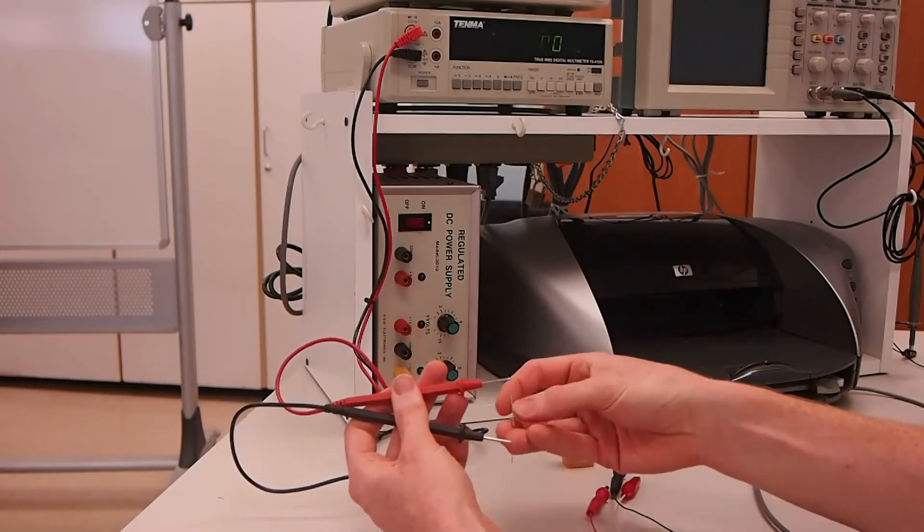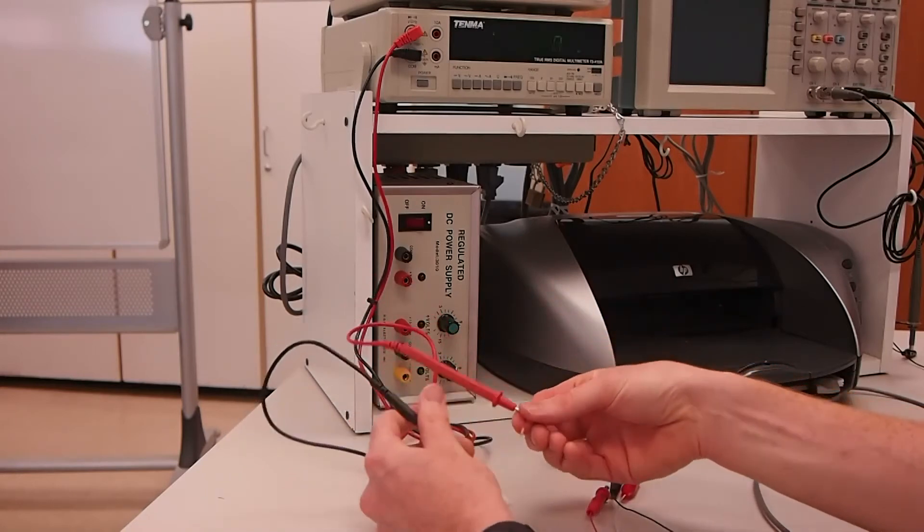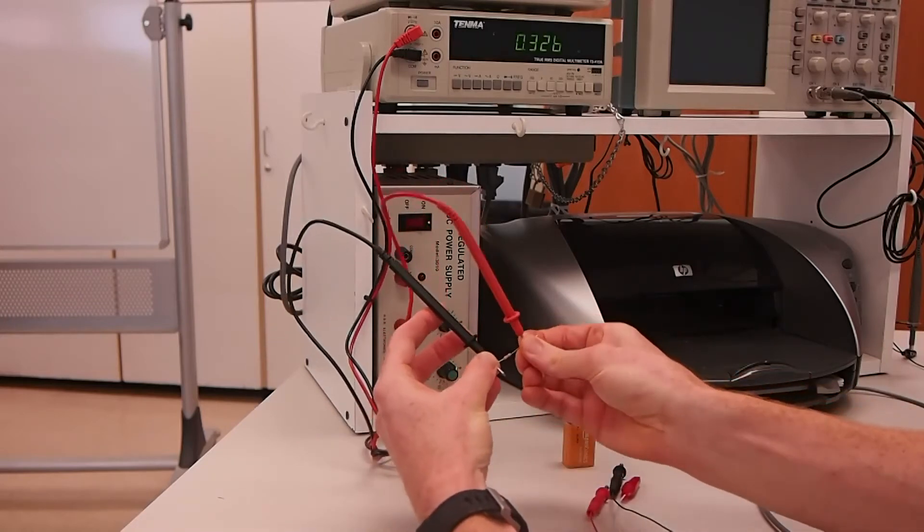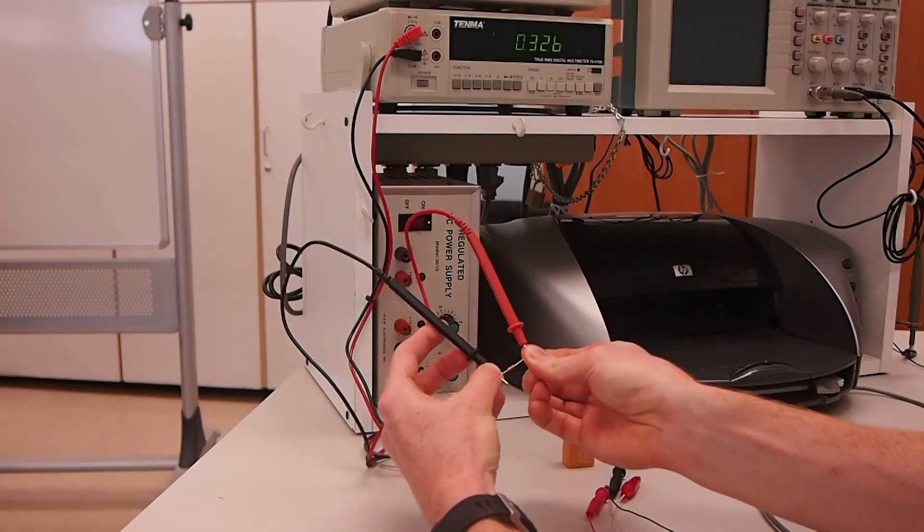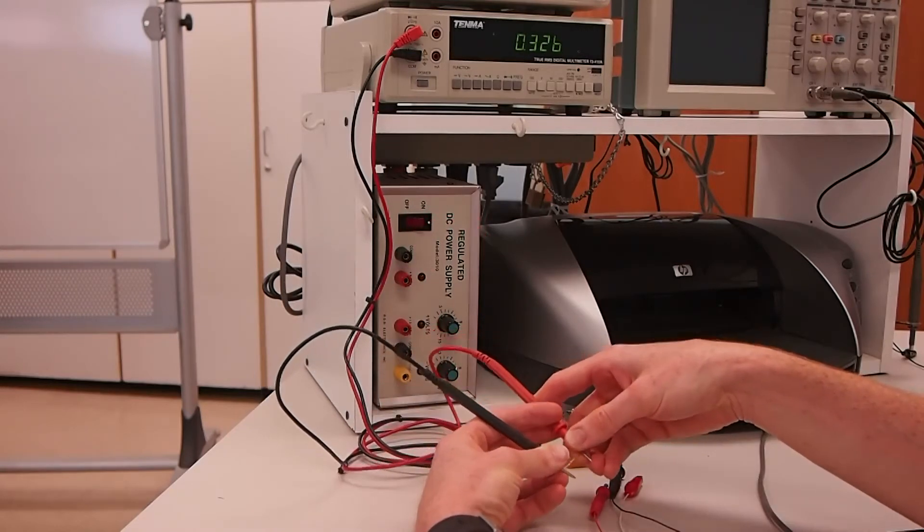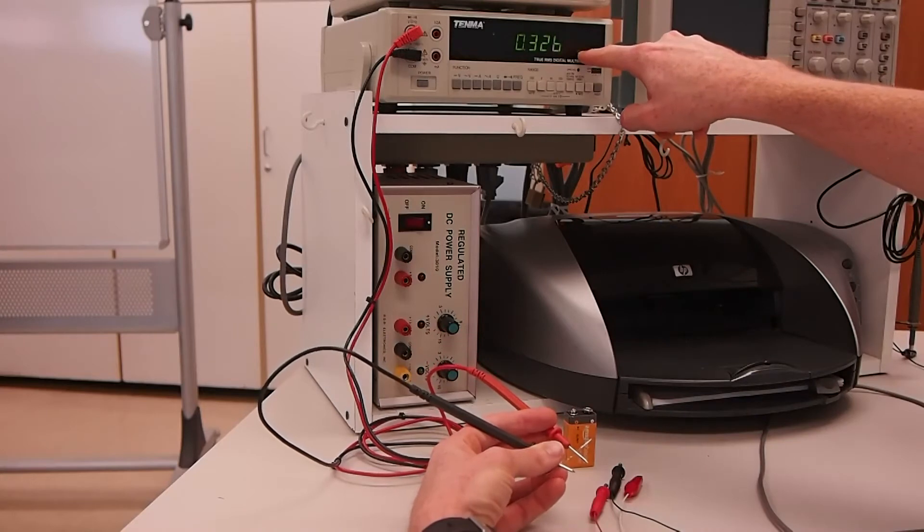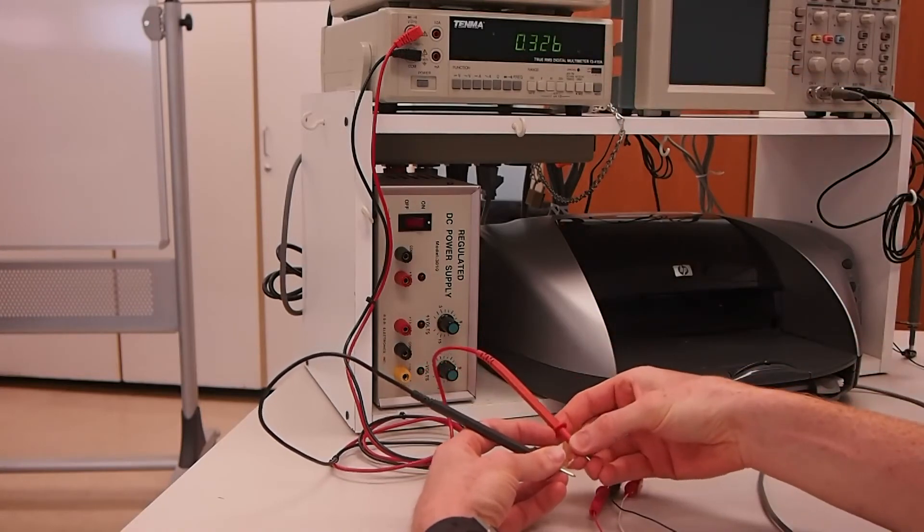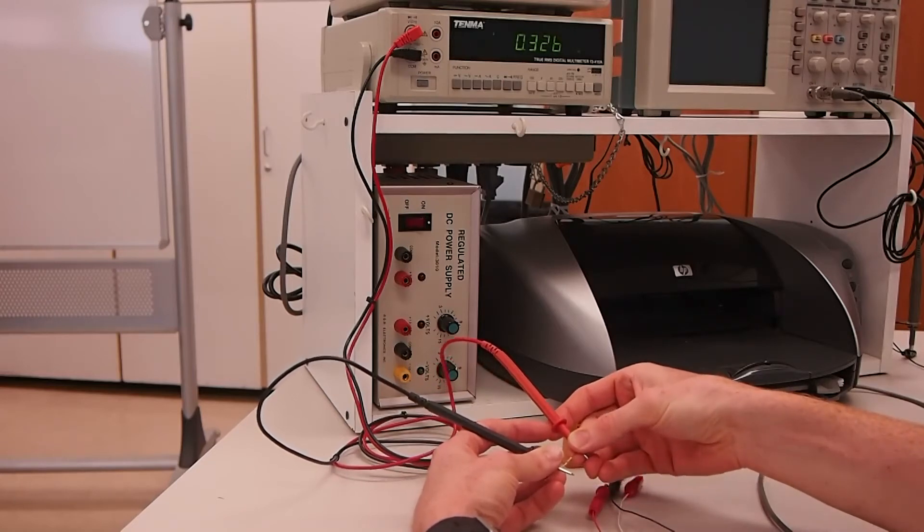And then we can go ahead and measure the resistor. So just holding one lead on each side of the resistor, we get 0.326. And your first thought might be ohms, but there's a little indicator over here that that's 0.326 kiloohms. So this is a kiloohm scale, so that would be 326 ohms.